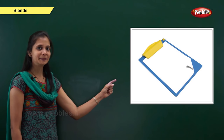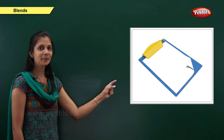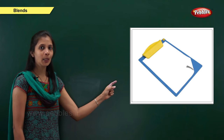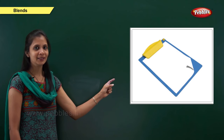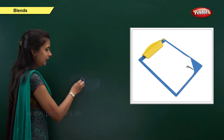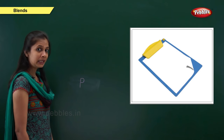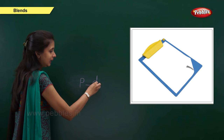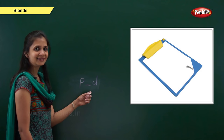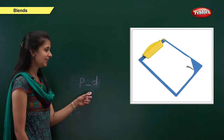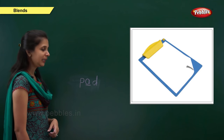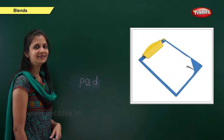Next one. Which picture is this? It is pad. What is the sound of this word? It is pa, a, d — pad. When the sound is 'pa', the letter is p. When the sound is 'd', the letter is d. What about the middle sound? It is 'a'. The letter is a. So: p, a, d — pad.